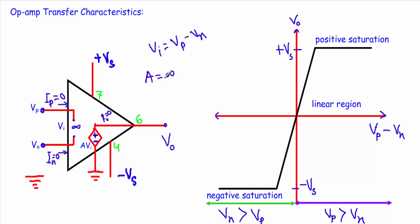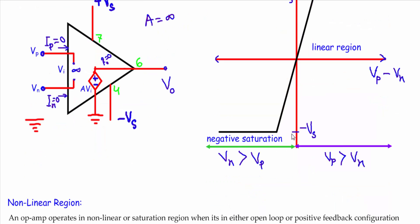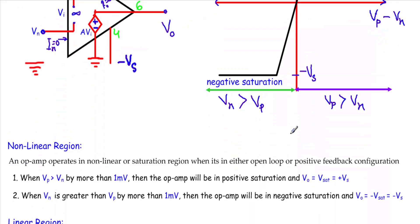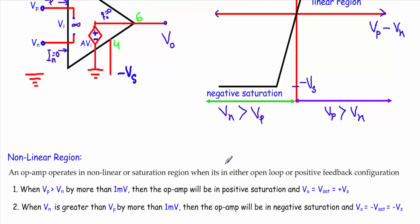The transfer characteristics of an operational amplifier has three divisions: positive saturation region, negative saturation region, and linear region. The positive saturation and negative saturation regions are nonlinear regions, and the middle portion is the linear region.